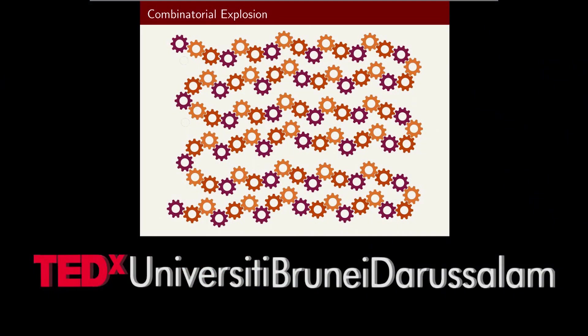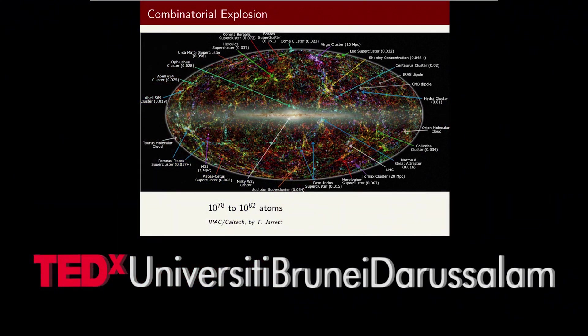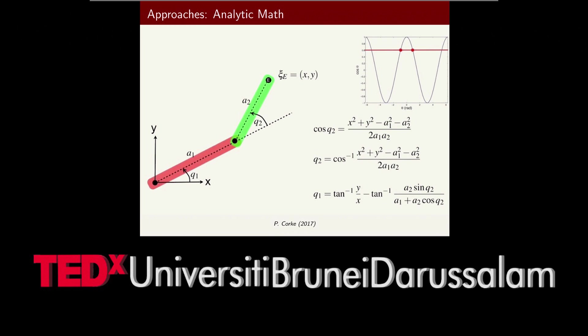Here's a little Rube Goldberg machine of 100 gears. If we just allow for seven different sizes for each of those gears, we would get 10 to the power of 84 possibilities to design this machine. By comparison, the visible universe contains about 10 to the 82 atoms. So there are 100 times more combinations in that 100-gear train than there are atoms in the visible universe. So how can we design devices that have so many possibilities in them?